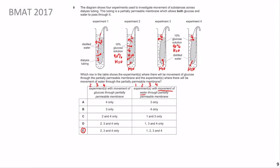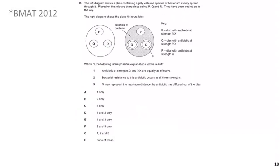In the previous question we focused on critical reading - specifically the distinction between net movement and mere movement. Now we move to BMAT 2012 Question 13, marked with a star because students have found it particularly difficult. The question shows a petri dish with agar jelly and one species of bacterium spread through it. Three discs called P, Q, and R have been placed on the plate, each treated with the same antibiotic but at different concentrations: P at quarter-x strength, Q at half-x strength, and R at full x strength.